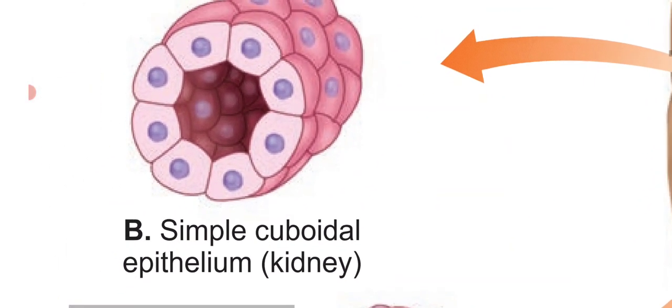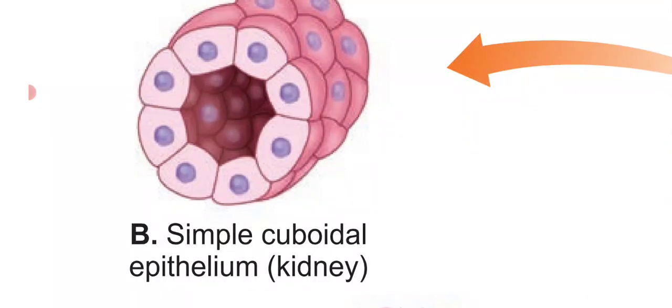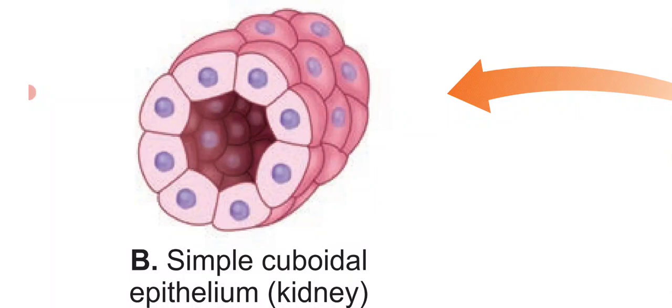Next is the simple cuboidal epithelium. Cuboidal epithelium is made up of a single layer of cube-like cells. This type of tissue is found in the kidney tubules, ducts and secretory portions of small glands, and the surface of the ovary. The main functions of cuboidal epithelium are secretion and absorption.